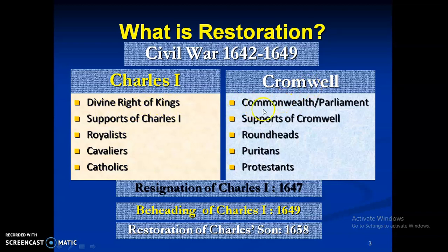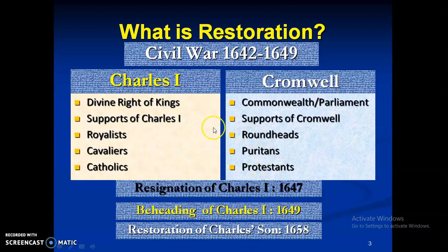Charles I's supporters were known as royalists or cavaliers, and they were Catholics — Charles I himself was a Catholic who believed in Catholicism. Cromwell was a Protestant, and his supporters were called Roundheads or Puritans, and they were Protestant by faith. So this was the war. Ultimately, Charles I had to resign in 1647, meaning the civil war which started in 1642 divided the whole of English society into two groups — some supporting Charles I and some supporting Cromwell, parliament, or the commonwealth.